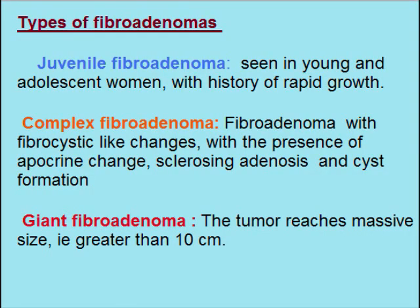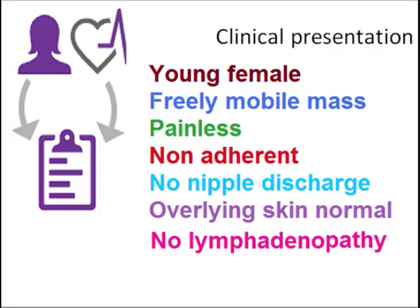Fibroadenoma can be classified as: juvenile fibroadenoma in young patients; complex fibroadenoma if fibrocystic-like changes are seen; and giant fibroadenoma if the tumor reaches a massive size greater than 10 cm. The positive points in clinical presentation are: young patient, freely mobile mass, painless, non-adherent to underlying structures or skin, no nipple discharge.